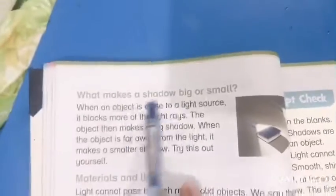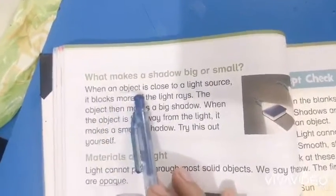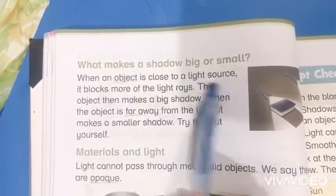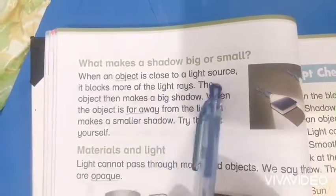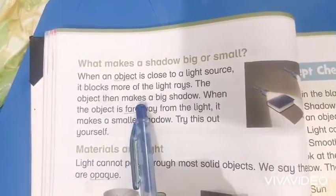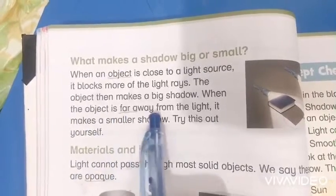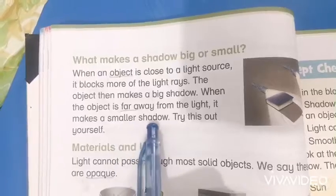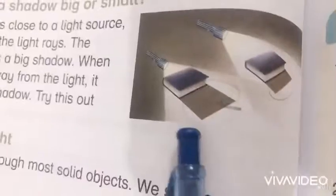What makes a shadow big or small? When an object is close to a light source, it blocks more of the light rays, so the object makes a big shadow. When the object is far away from the light, it makes a smaller shadow. Try this out yourself — you can see this in the picture.